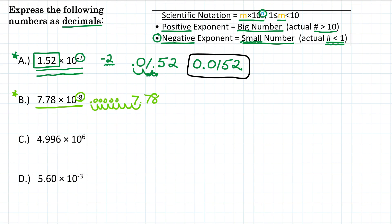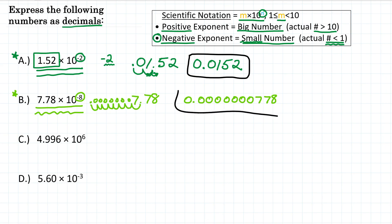All of those spots are going to be zeros — seven zeros total. So writing this out: 0. followed by 7 zeros — 1, 2, 3, 4, 5, 6, 7 — and then 7, 7, 8 after that. So for B, 7.78 times 10 to the negative 8 is the same as 0.00000778.